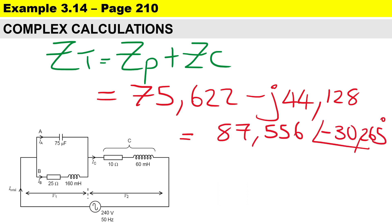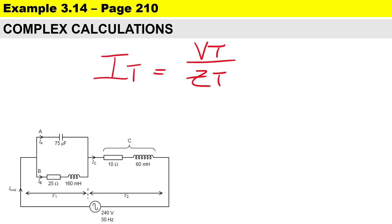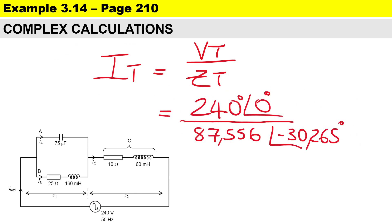Always round off to three decimal places for accurate answers. To calculate the total current we divide in polar format. Voltage is our reference point at zero degrees, so we compute zero degrees minus negative 30.265 degrees.